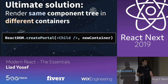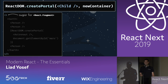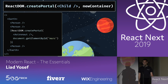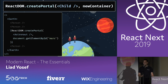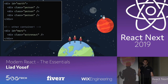The ultimate solution React provides is CreatePortal, which allows rendering the same component tree in different containers. For example, Earth wants to render people but also wants to render an astronaut on Mars. The first and second person render on Earth, then CreatePortal — even within the same render flow — renders the astronaut on Mars, not Earth. Looking at the DOM, you see two containers: Earth and Mars, even though it's the same component tree.